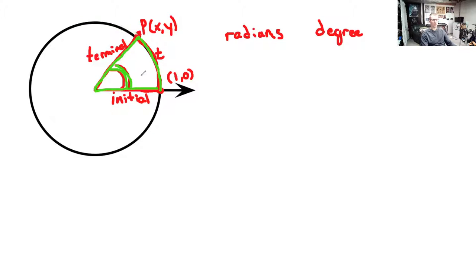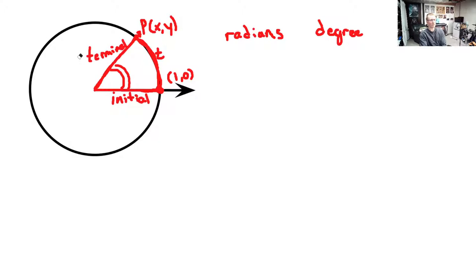This is one way to discuss angles — to talk about measures of angles — and it's defined by an aspect of the circle itself. It's self-defined: we take some aspect of the circle and define all angles in terms of that aspect of the circle itself.